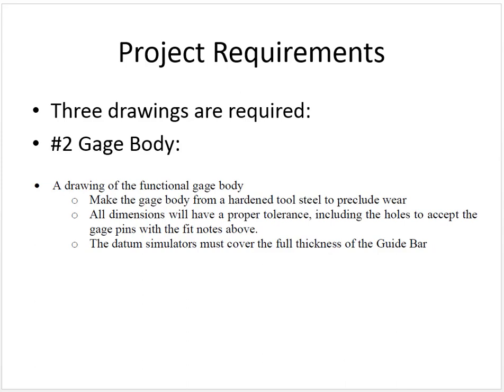The second drawing we need is the gauge body. The gauge body is produced from hardened tool steel to preclude wear. All dimensions will have a proper tolerance, including the holes to accept the gauge pins, and the fit notes above — the holes that accept the gauge pins need to be designed to meet the fit of two-tenths to four-tenths. The datum simulators must cover the full thickness of the part. If you decide to machine the datum simulators into a block, that would be perfectly acceptable, but those datum simulators need to be high enough to cover the entire thickness of the gauge body.